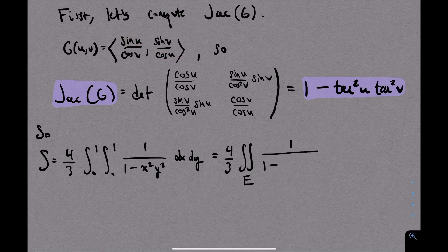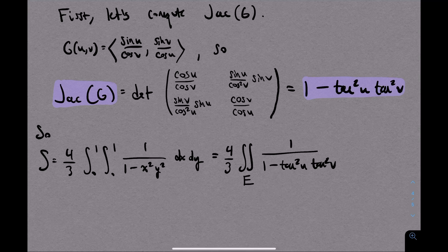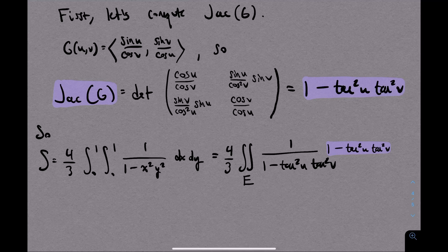And then likewise we get sine squared of v over cosine squared of v. That's tangent squared of v. So the transformed denominator is exactly the same as the Jacobian we calculated earlier. When we multiply them together, they cancel out, leaving us with a double integral of 1.